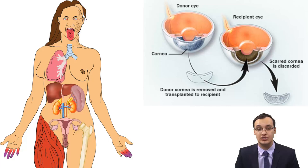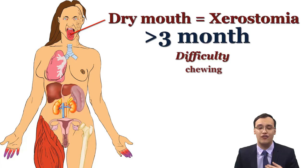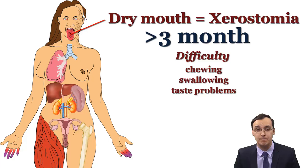Dry mouth, also called xerostomia, lasting more than 3 months is also an important sign of Sjogren's syndrome. The patient reports daily dry mouth with difficulty chewing, swallowing, and even altered taste of food. The exocrine glands destroyed here are the salivary glands — the parotid, the submandibular, the sublingual, and minor salivary glands.